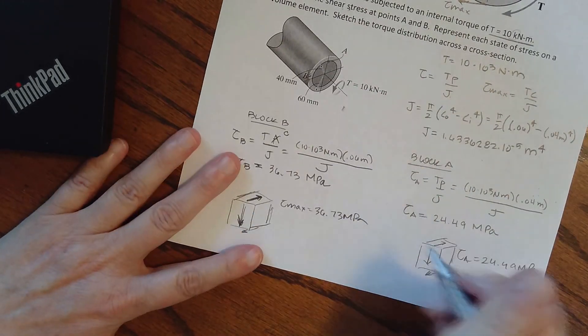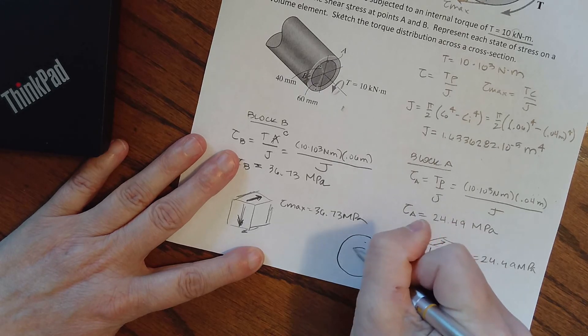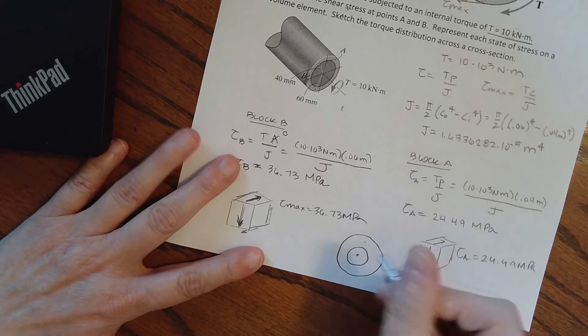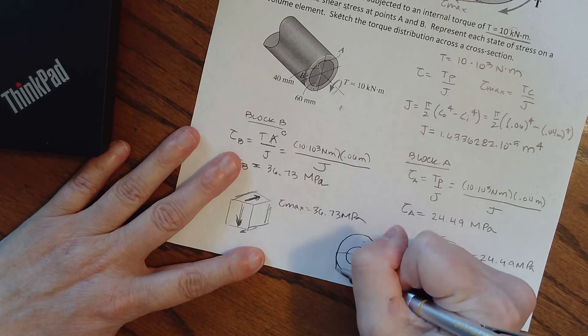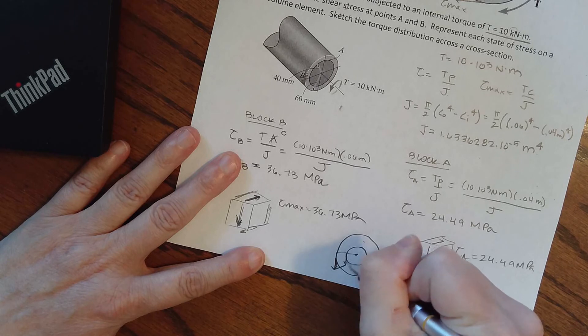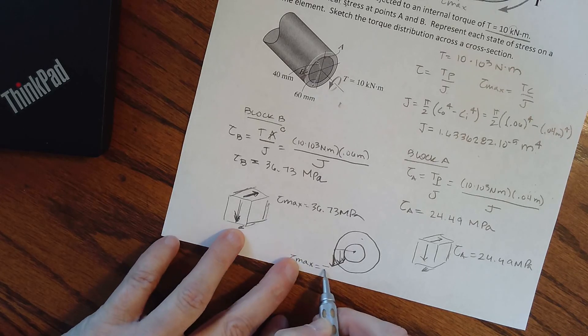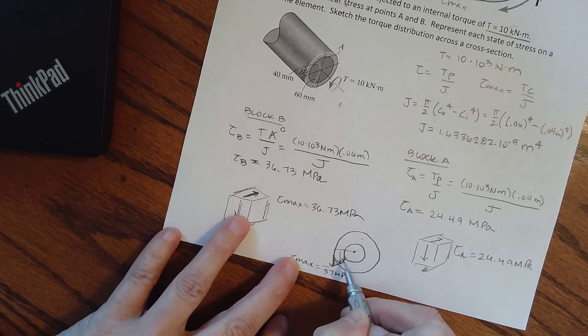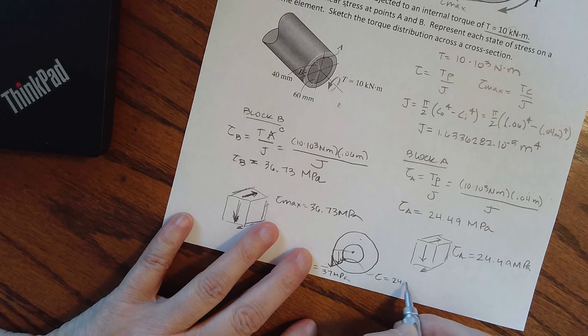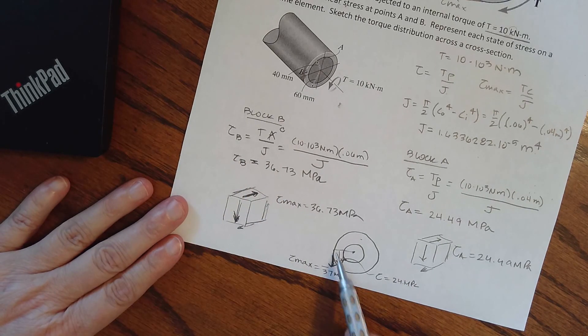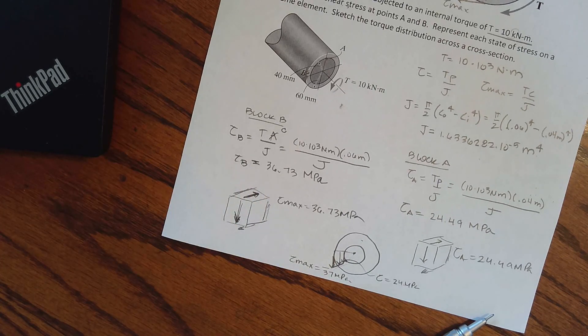And then if I were to draw it on the cross section, so let's put them together. Then it's going to come, we're coming down, so we're going to go across like this, we're going to go down and go down. We are showing on this point we have T max of 37 mega pascals, and this point right here on the inside is going to be 24 mega pascals. And so it's distributed linearly. If it were solid, then it would go all the way to the middle as zero.